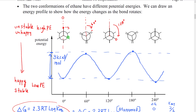Looking at our specific situation, the staggered conformation has a low potential energy whereas the eclipsed has a higher potential energy. The difference between those two potential energies is about 3 kilocalories per mole of molecules. Very often we're just going to leave out the 'per mole' and say there's a 3 kilocalorie difference, with the understanding that we mean per mole of molecules.